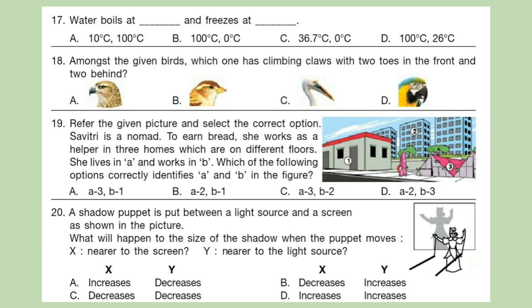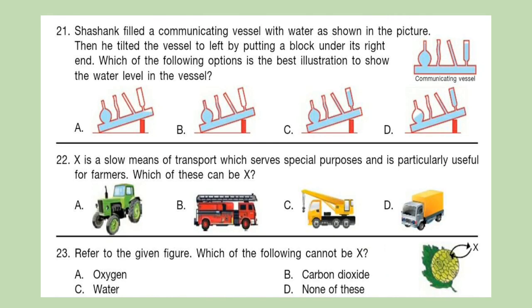Question 20: A shadow puppet is put between a light source and a screen as shown in the picture. Question 21: What will happen to the size of the shadow when the puppet moves X nearer to the screen, Y nearer to the light source? Question 21: Shashank filled a communicating vessel with water as shown in the picture, then he tilted the vessel to left by putting a block under its right end. Which of the following options is the best illustration to show the water level in the vessel?